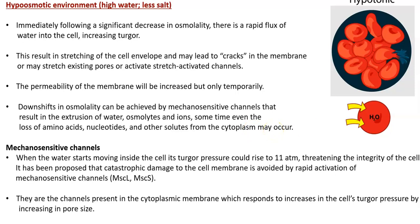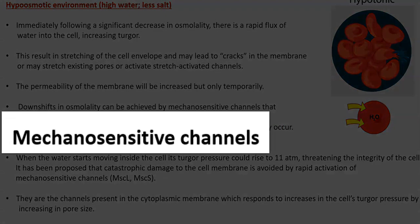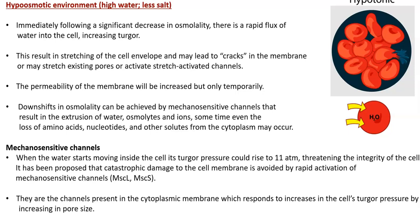One important mechanism under hypoosmotic conditions is the activation of mechanosensitive channels. When water moves inside the cell, its turgor pressure can rise to 11 atmospheres, threatening cell integrity. It has been proposed that catastrophic damage to the cell membrane can be avoided when mechanosensitive channels — including MscL and MscS — are activated. These channels are present in the cytoplasmic membrane and become activated in response to increased turgor pressure, thereby increasing pore size.